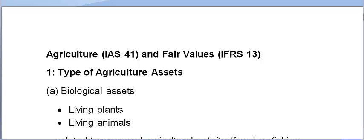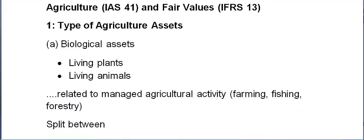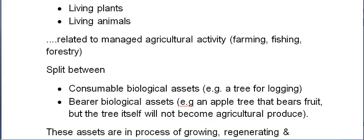Here we're going to look at fair values in the context of agriculture. These two standards work quite well together in relation to the new rules. A quick trawl through IAS 41: we've got biological assets in the form of plants and animals, and these are only in the context of having managed agricultural activity. So if you've got a pet cat or dog at your factory, that probably wouldn't be deemed to be part of agriculture.